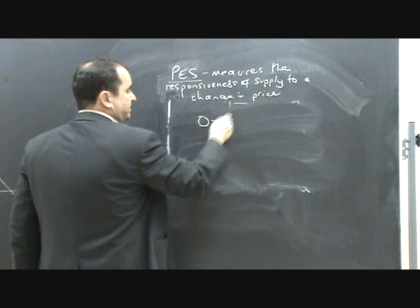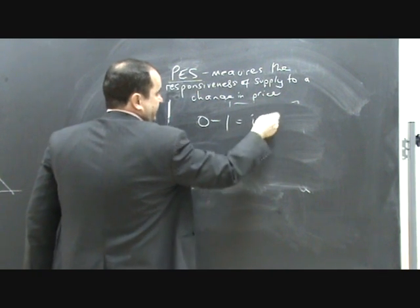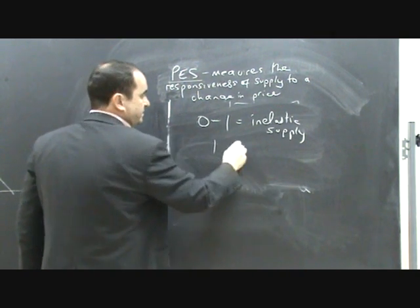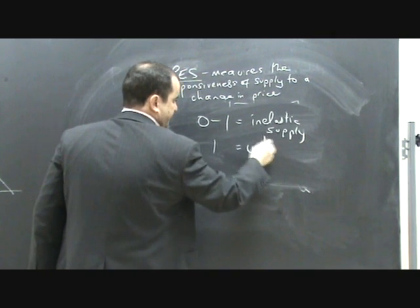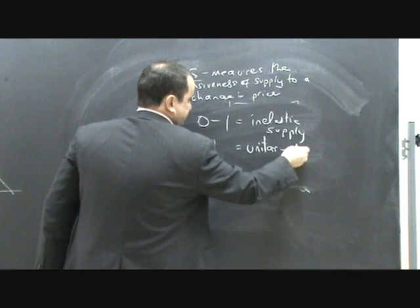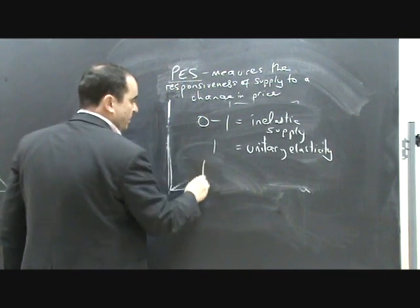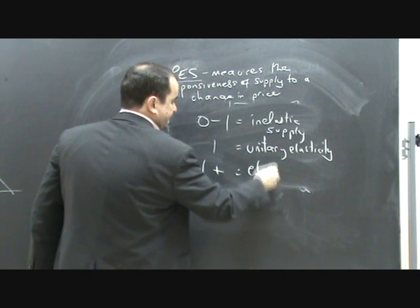If the value is between 0 and 1, we say there is inelastic supply. If the value is 1, we say unitary elasticity. And if it's over 1, if it's above 1, we say elastic supply.